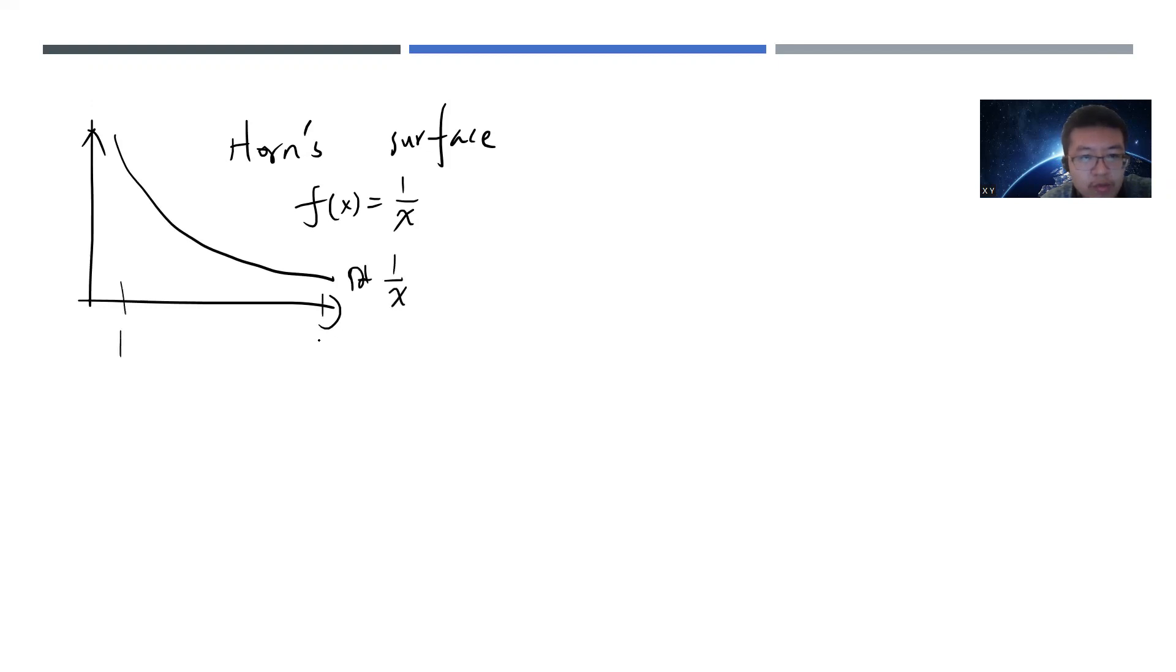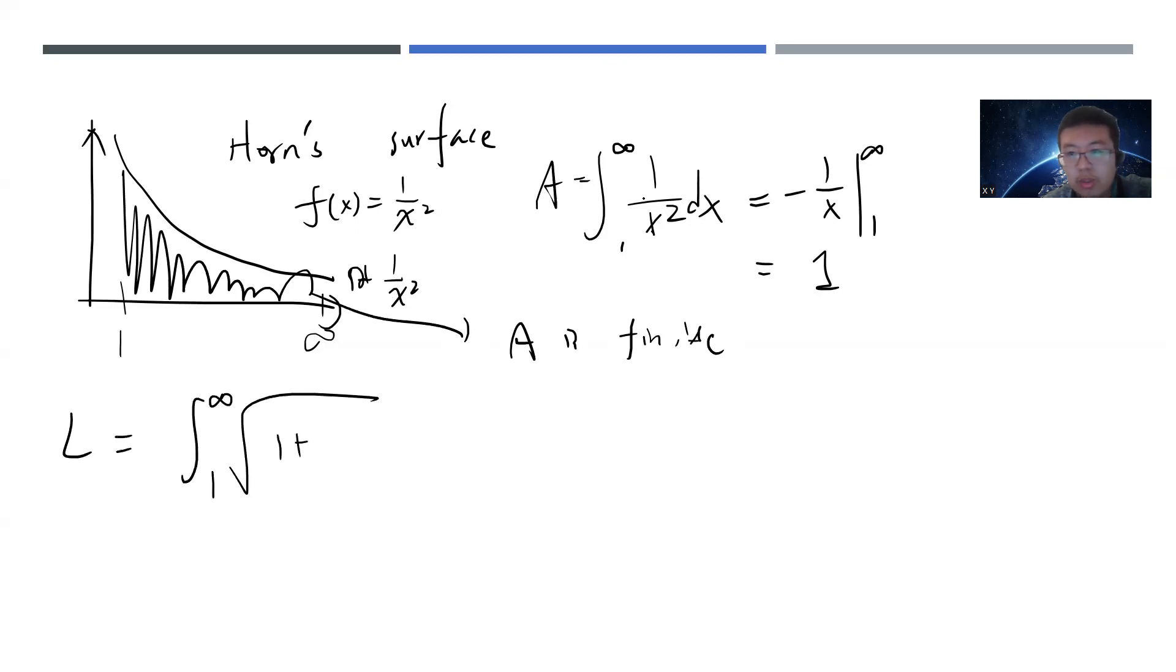But you can consider a function called f of x equals one over x. And then if you go from one to infinity, then you can easily see that, maybe let's just say, or let's consider this one over x squared. Okay. If you go to one to infinity, then you can see this.